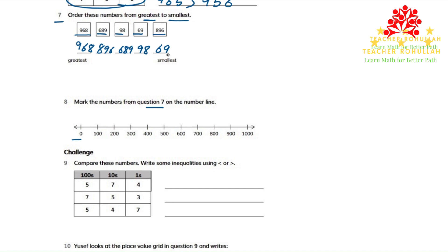The smallest number in question number seven is 69. So the number halfway between zero and 100 is 50, and 69 is somewhere around here.